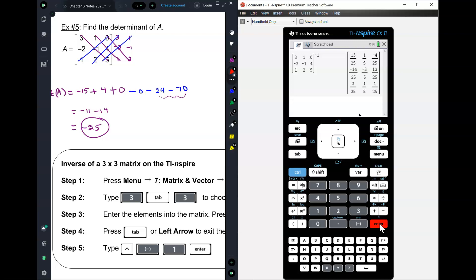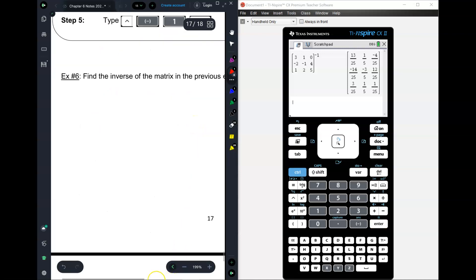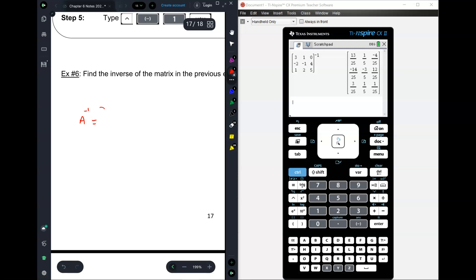There's a setting. I can tell you guys the setting. Because you're going to want to do it in a fraction form. So here, all you have to know is for example number six, you say A inverse is equal to 13 over 25, negative 14 over 25, just write it down.